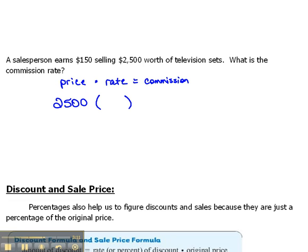Now, the rate is what we don't know, and in fact, that's what we're solving for. So, we're going to leave that as our unknown amount. So, $2,500 times X equals the commission. Well, this person earned $150 after the sale, so that is their commission.